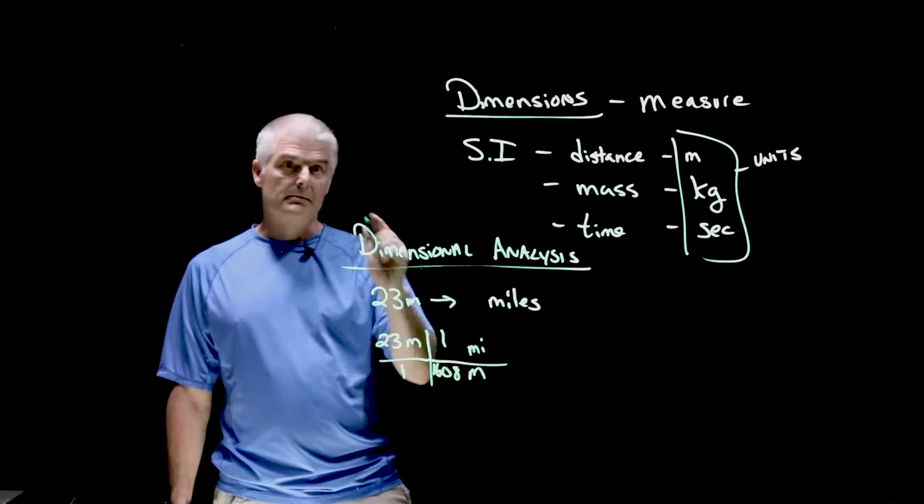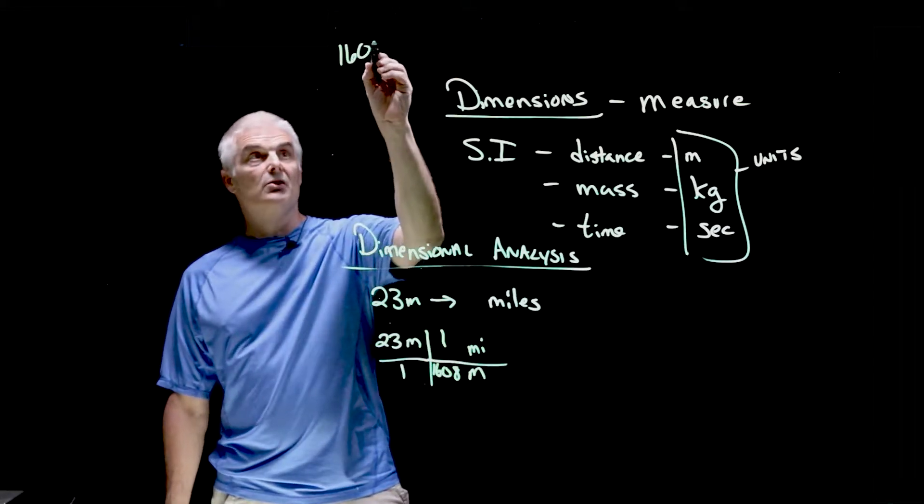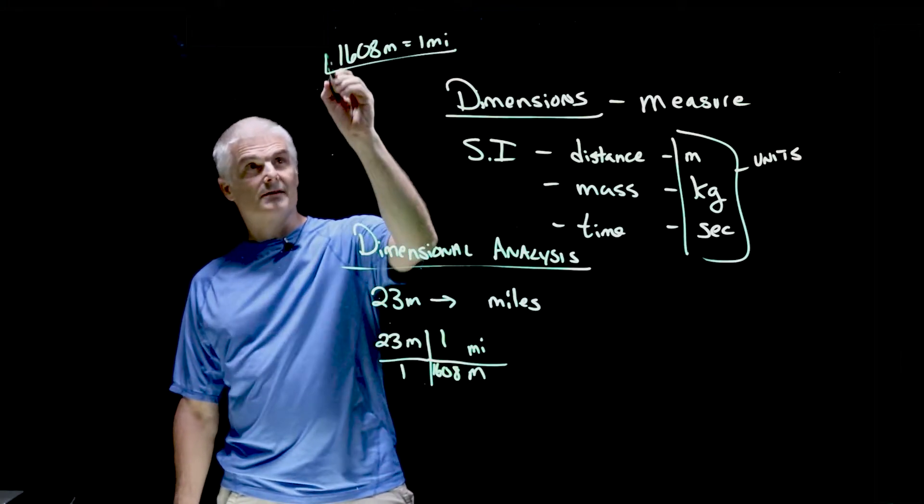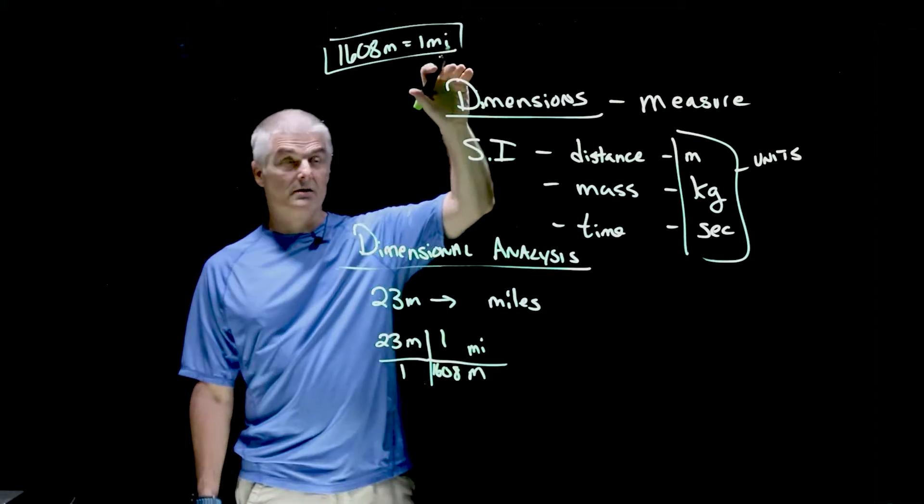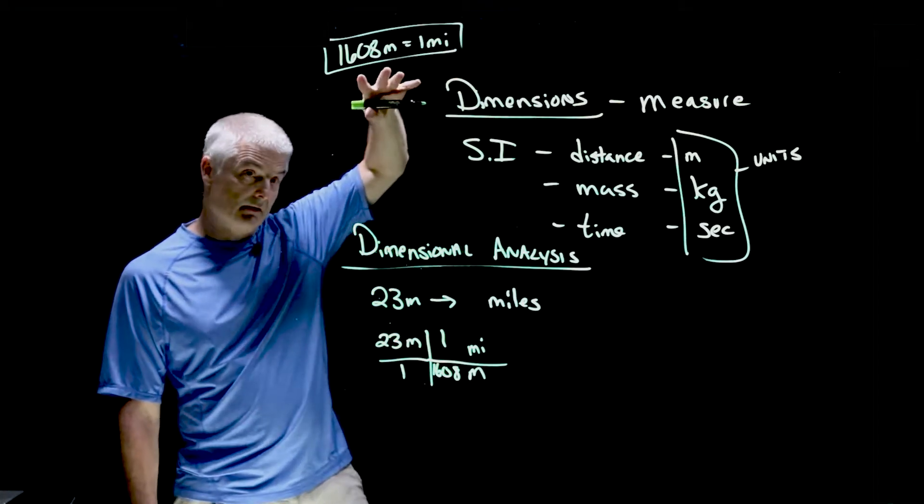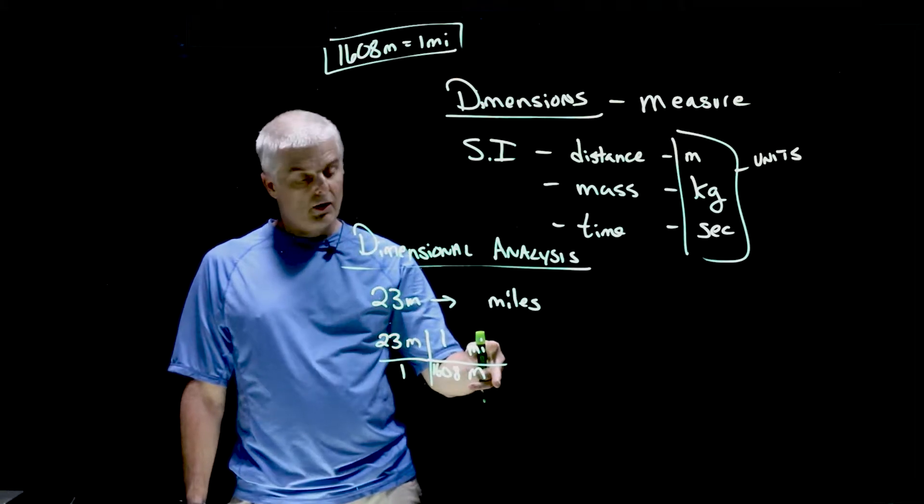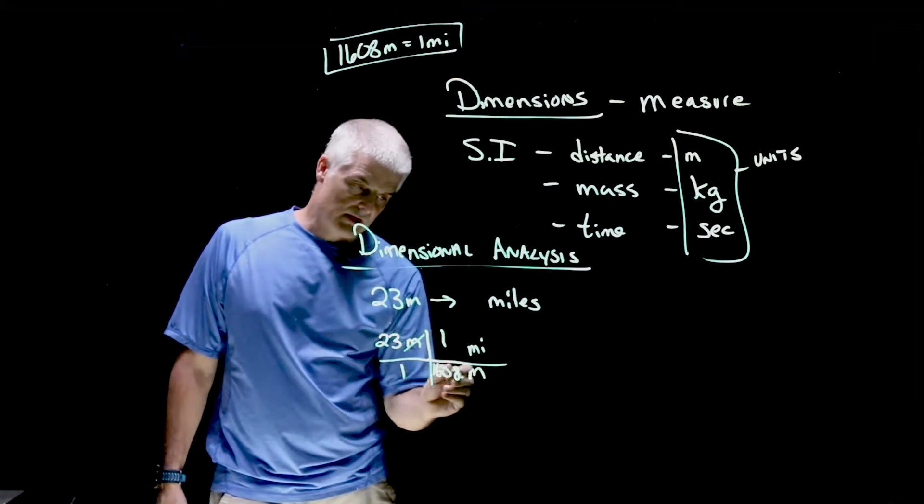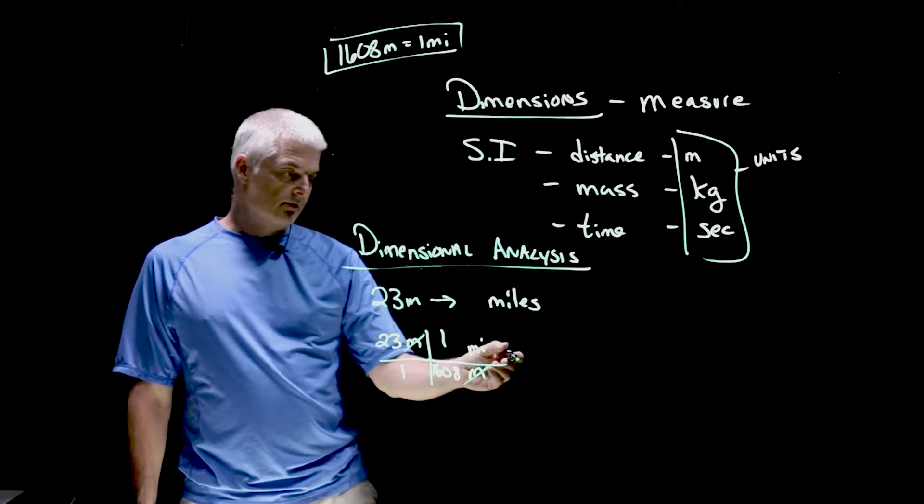Now, you could write 1,608 meters is equal to one mile. And what I have to do is I can write this as a fraction. It's really the same number divided by the same number. One mile and 1,608 meters are the same thing. I can write it one mile over 1,608 meters, or I can write it the reverse. Because the goal here is to cancel off the meters.